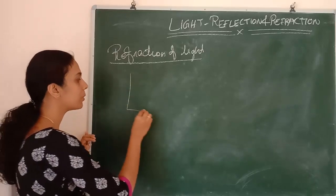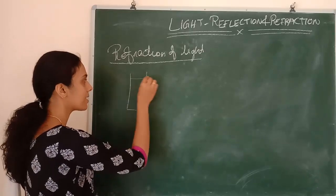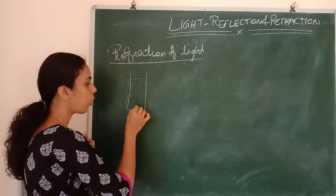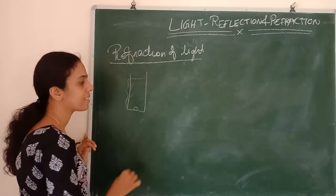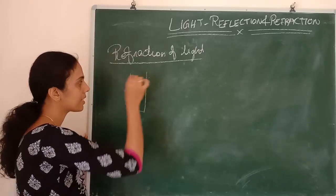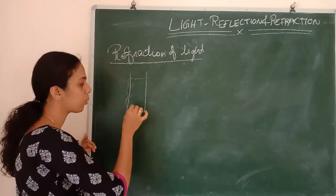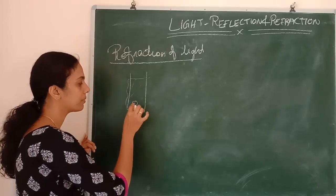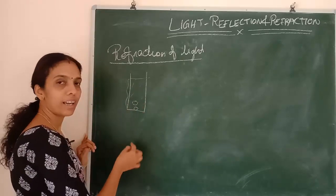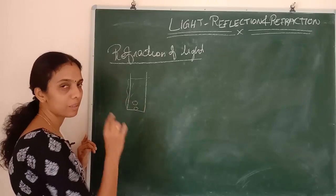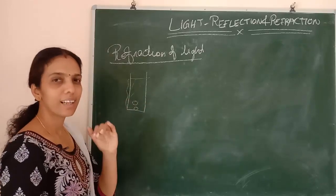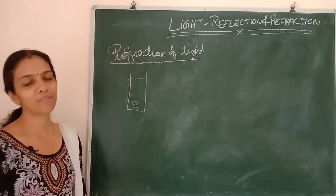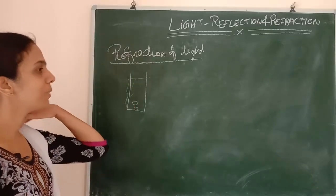One more example you will be learning in small classes: if we keep a coin inside a glass which has water, we will feel it is a little bit above its actual position. It's actually not there — it appears a little bit above. That is the magic of light — that is refraction.